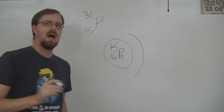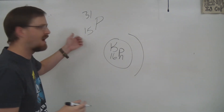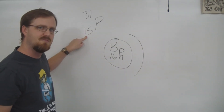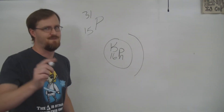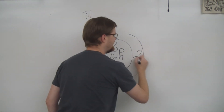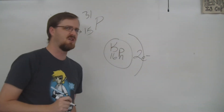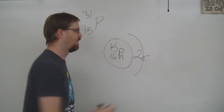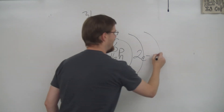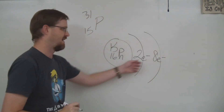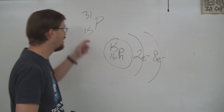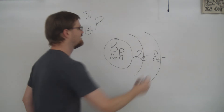Now it is time to draw the energy levels. The total number of electrons is the same as the number of protons — so 15 electrons. How many can go in the first level? That's right, only two. For the second level, we can have eight electrons. That adds up to ten electrons — but we have 15, so we need a third level.